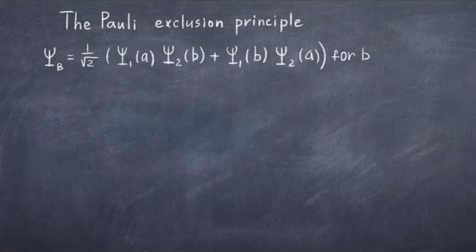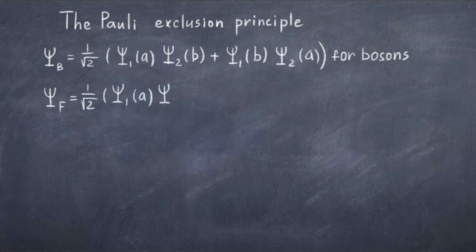Finally, we can consider the equation for fermions, where psi f is 1 over square root 2 times psi 1 in state A times psi 2 in state B minus psi 1 in state B times psi 2 in state A, where we now have a minus sign because fermions are anti-symmetric. Now, here comes the crazy part.